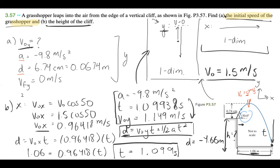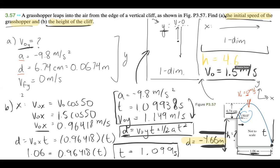So that means when the grasshopper reaches the floor, it's at negative 4.66 meters, which means the height of the cliff is 4.66 meters. The height of the cliff is equal to 4.66 meters.